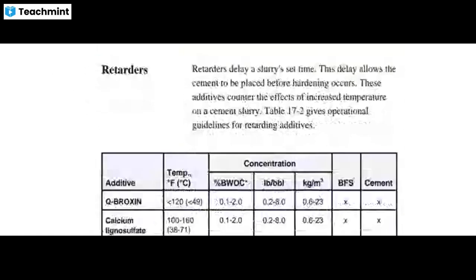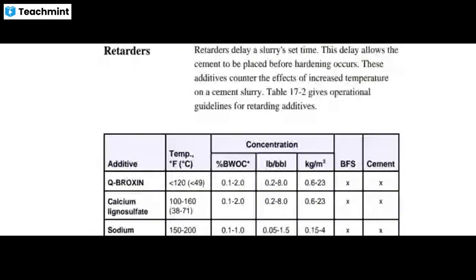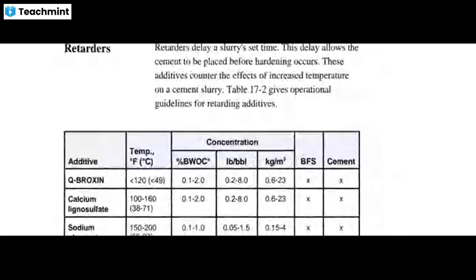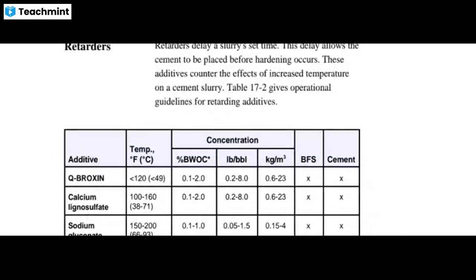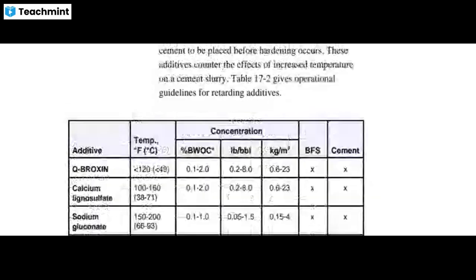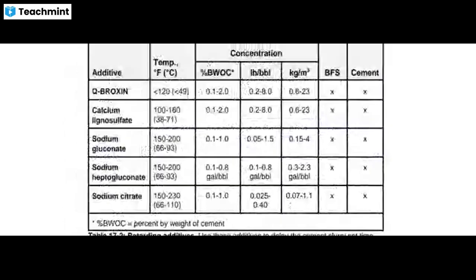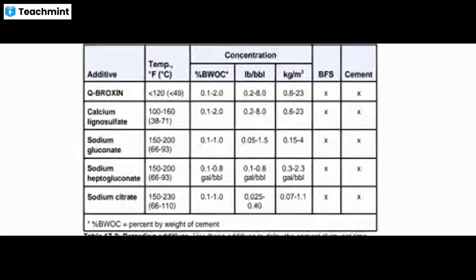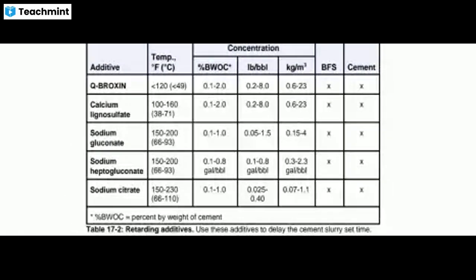Retarders delay the slurry set time, and this delay allows the cement to be placed before hardening occurs. These additives counter the effect of increased temperature on the cement slurry. This table gives the operation guidelines for retarding additives: Q-broxine, calcium lignosulfate, sodium gluconate, sodium heptogluconate, and sodium citrate. Concentration is also shown.